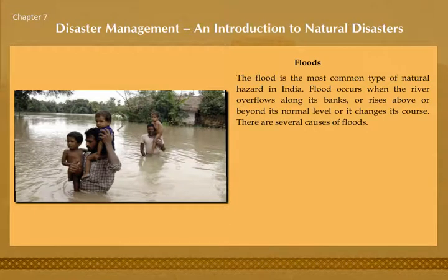Floods are the most common type of natural hazard in India. A flood occurs when the river overflows along its banks, rises above its normal level, or changes its course. There are several causes of floods.